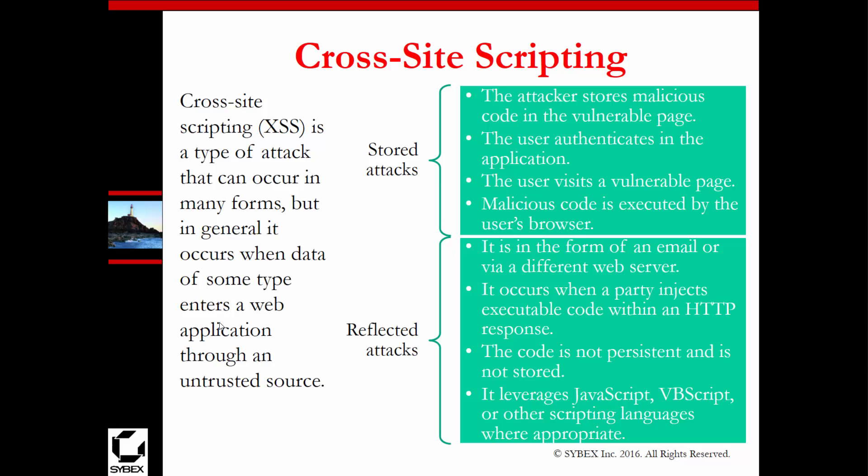We also have cross-site scripting (XSS), a type of attack that can occur in many forms. Generally it occurs when data enters a web application through an untrusted source. The attacker stores malicious code in a vulnerable page, the user visits that page, executes the code, and gets infected. Reflected attacks can come via email or a different web browser — they occur when a party injects executable code into an HTTP response. The code is not persistent and not stored, and it can use JavaScript or VBScript. Stored XSS is stored on the page, while reflected XSS is injected into header information.